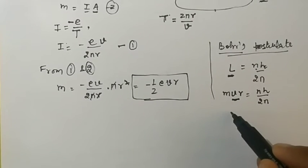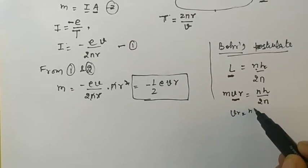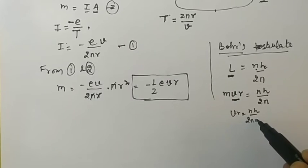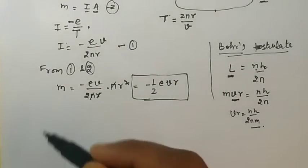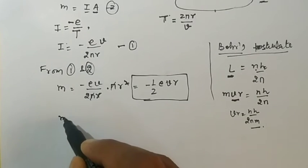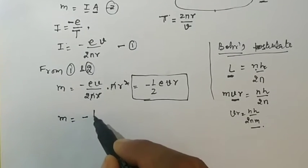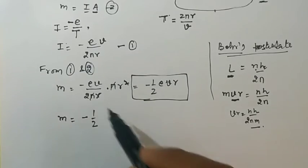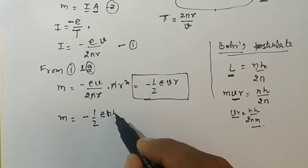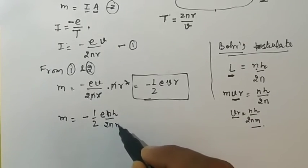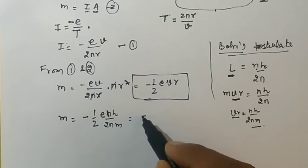Now put the value in this equation. The magnetic dipole moment becomes minus 1/2 times e times vr, which is equal to nh/2πm.